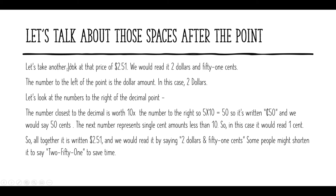Let's talk about those spaces before and after the decimal point. Take another look at the price two dollars and fifty-one cents. This would be written as $2.51, and we would read it as 'two dollars and fifty-one cents.' The number to the left of the decimal point is the dollar amount — in this case, two dollars.